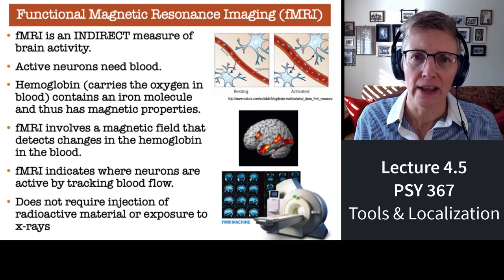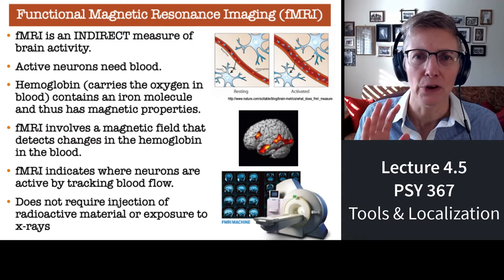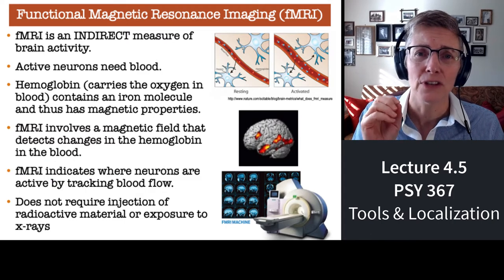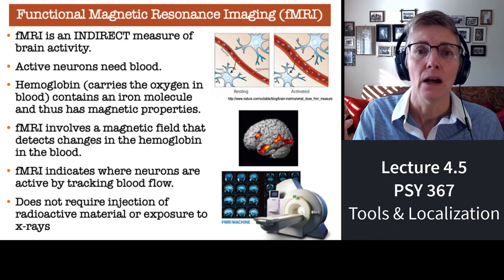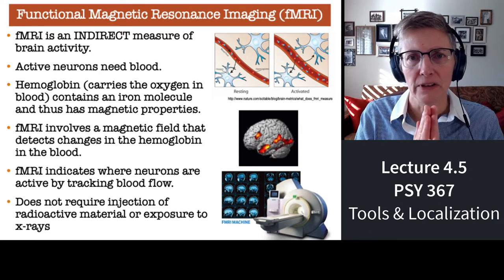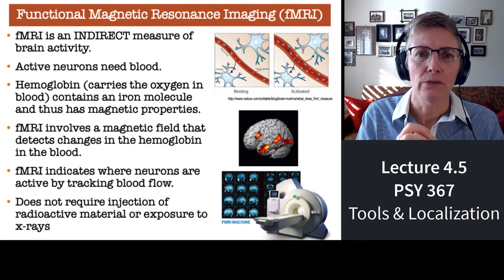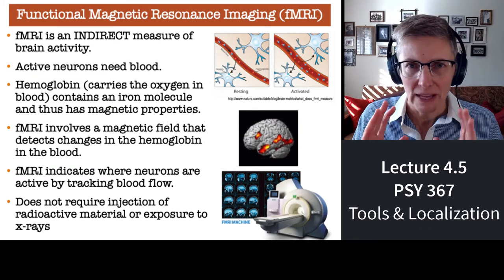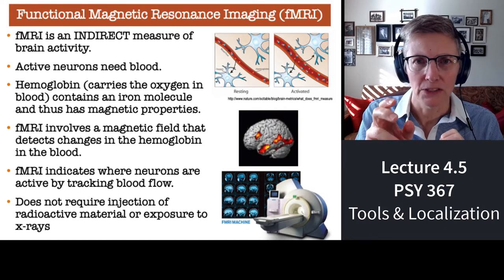Part of the limited temporal resolution is a function of what fMRI actually measures. We speak as if fMRI measures the activity of neurons in the brain, but it actually doesn't do that — it's an indirect measure. fMRI measures blood deoxygenation. Remember how energy-hungry your brain is: neurons need oxygen and glucose from the blood. Neurons that have been very active remove more oxygen, so fMRI actually measures the presence or absence of iron molecules in the blood.